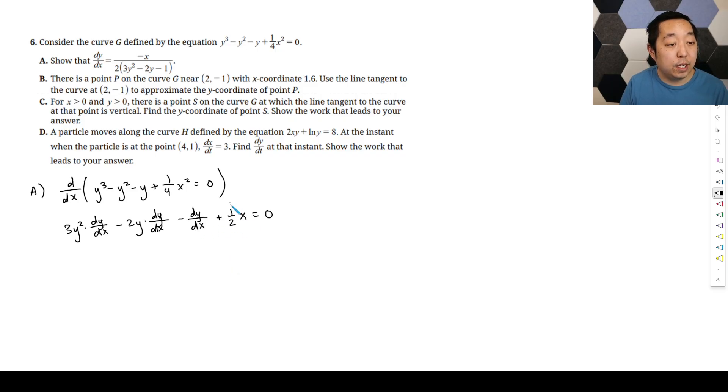So you're going to move everything that doesn't have a dy dx to the other side. And on this side we factor out a dy dx. So you're going to get 3y squared minus 2y minus 1 is equal to negative one half x. And then just divide this to the denominator.